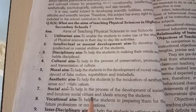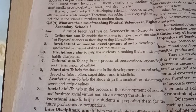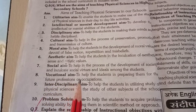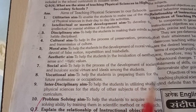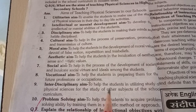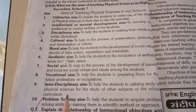The social aim is to help in the process of the development of society and to inculcate social virtues and ideals among the students. Then we have the vocational aim — to help the students in preparing them for future professions or occupations. The interdisciplinary aim is to help the students in utilizing the study of physical sciences for the study of other subjects of the school curriculum.